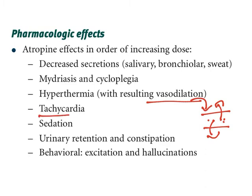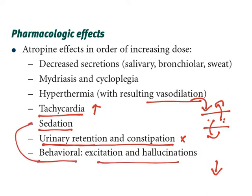The next effect is tachycardia. The cholinergic effect on the heart is reduced heart rate, so the opposite — increased heart rate — is tachycardia. Sedation is a CNS effect. Urinary retention and constipation occur because M3 receptors present in the GI tract cause urinary voiding and defecation; both are inhibited. Behavioral excitation, hallucination, and sedation are all related to CNS muscarinic receptors. These are the overall effects of atropine on the human body.